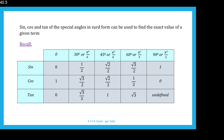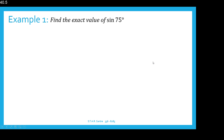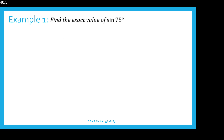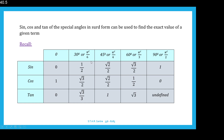Application of the compound angle formulae. We have learned the table of special angles giving the exact values of sin, cos, and tan for the special angles in surd form. With this knowledge, we can find the exact values of sin, cos, and tan of a given angle without the use of a calculator, by expressing the angle as a sum or difference of two special angles.